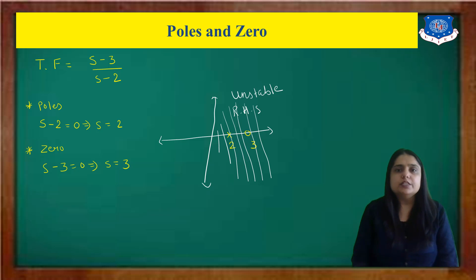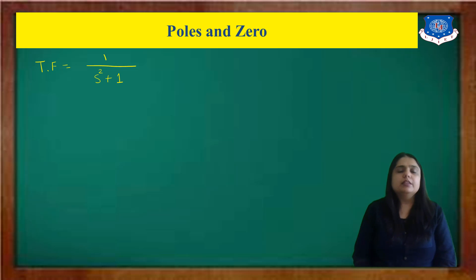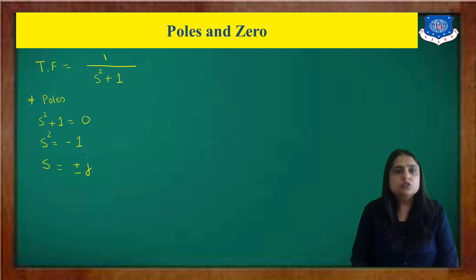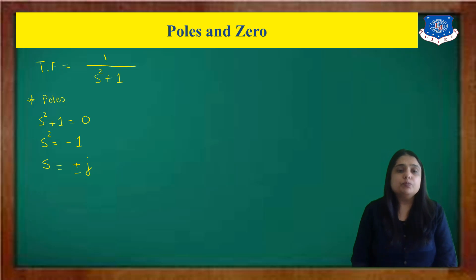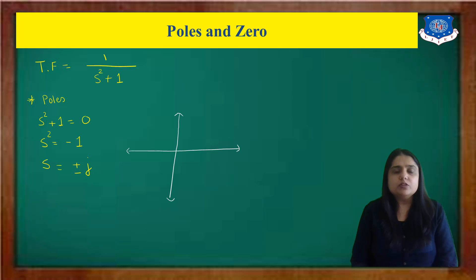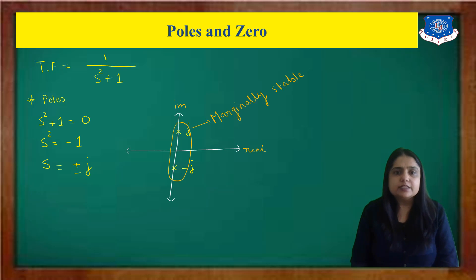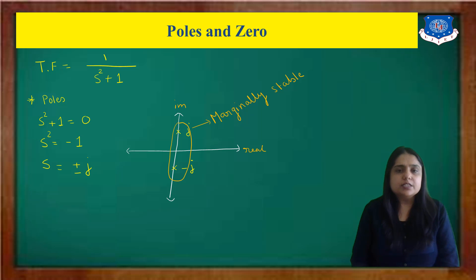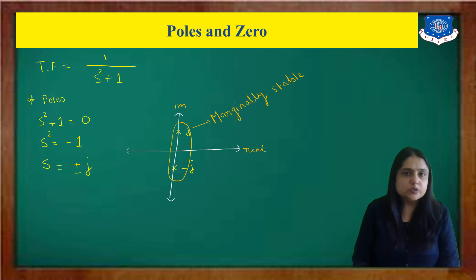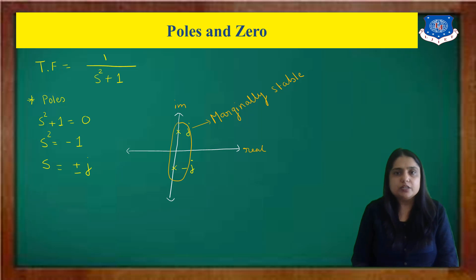For marginally stable, poles and zeros lie on the imaginary axis. Consider the transfer function 1/(s²+1). The poles are found from s²+1=0, giving s²=−1, so s=±j. There are no zeros in this transfer function. When plotted, the poles lie on the imaginary axis, so the system is marginally stable. For a short note on poles and zeros, write a general transfer function, define poles and zeros, and give all three examples.